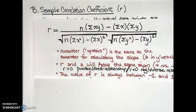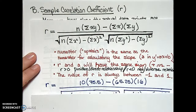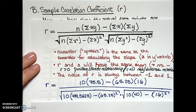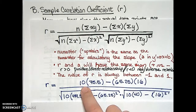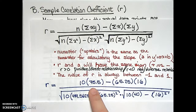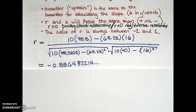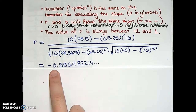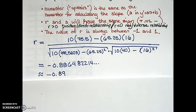Let's calculate the sample correlation coefficient r for our example of hours of sleep and cups of coffee. Pulling up the formula and substituting in the values from our data set — we surveyed 10 people so n equals 10, the sum of xy was 75.5, and so on. Plugging everything into the calculator, we obtain r approximately equal to negative 0.8864, or rounded to negative 0.89. This does indeed fall between negative one and one as expected.